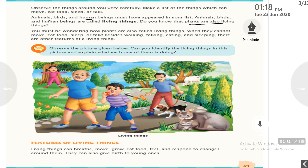You must be wondering how plants are called living things when they cannot move, eat food, sleep or talk. But besides walking, talking, eating and sleeping, there are many other features of living things that we will see in this chapter. Human beings, dog, cat, cow, tree — these all are living things.